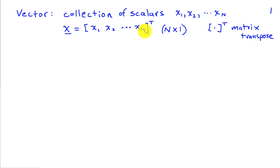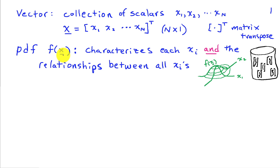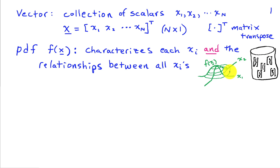This is a general way of describing a collection of n random quantities or random variables. Just as in the scalar case, vectors also have a PDF — probability density function — written as f of the vector x. This probability density function not only characterizes the random behavior of each entry of the vector, but also the relationships between all the entries. I've drawn a two-dimensional example where N equals 2, so the PDF is the height above the plane for different combinations of x1 and x2.